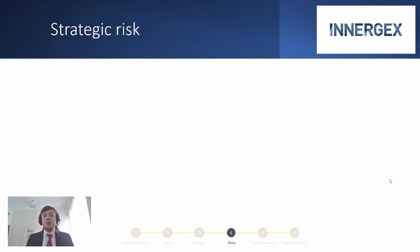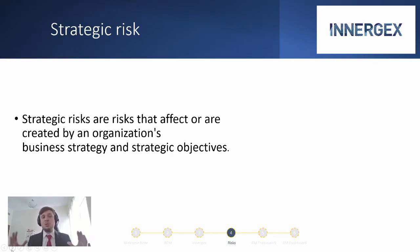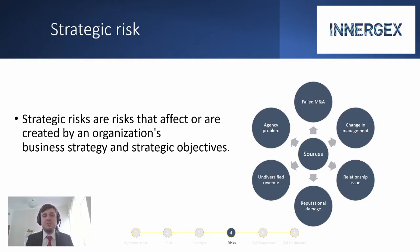The next risk we will discuss is strategic risk — the risk that affects or is created by an organization's business strategy and strategic objectives. The source of this risk would typically be decisions of senior management. Some brief examples are failed M&As, agency problems if we are not able to select reliable managers for overseas operations, and reputational damage.